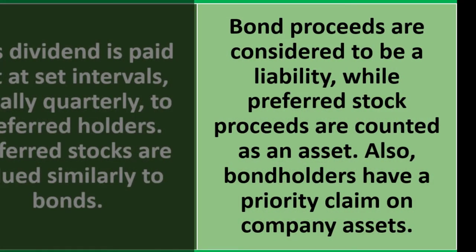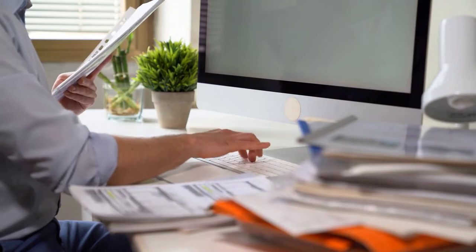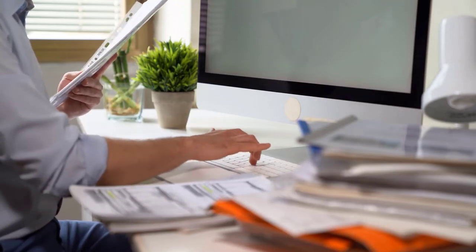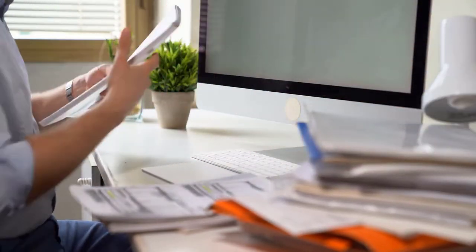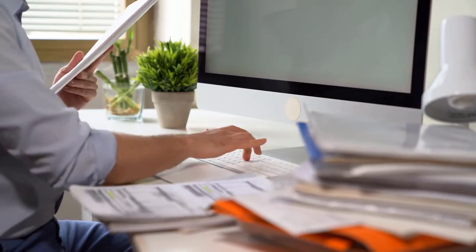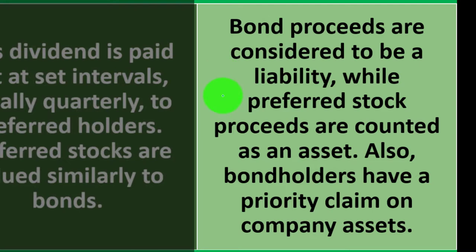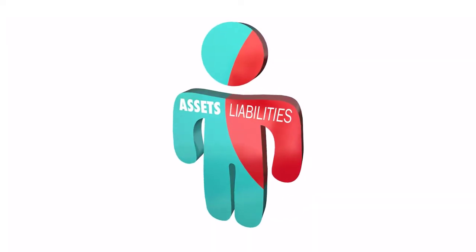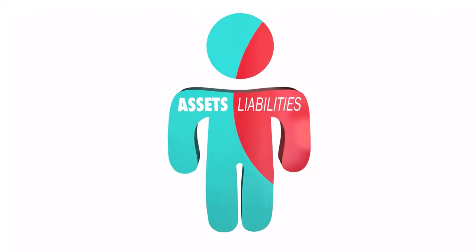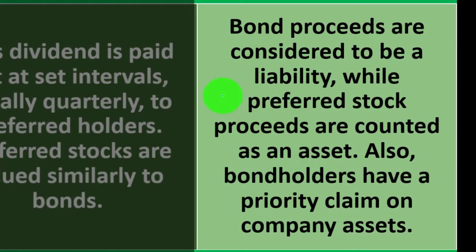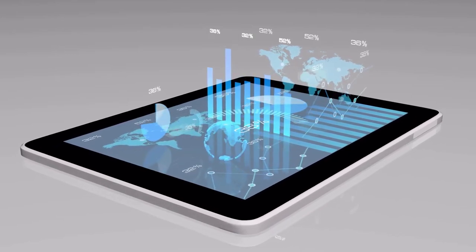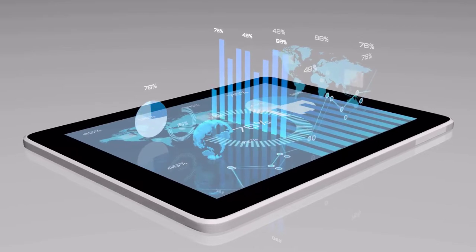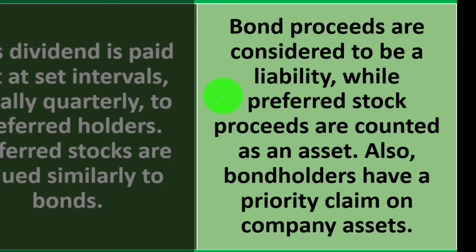Bond proceeds are considered a liability, while preferred stock proceeds are counted as an asset. Bondholders have a priority claim on company assets. On the company's balance sheet, when they issue a bond, it's recorded on the liability side as bonds payable. The preferred stock proceeds, on the other hand, are counted as equity — not a debt instrument. The company receives funding by issuing preferred stock. Remember: the accounting equation is assets equal liabilities plus equity, so equity represents the owner's interest.